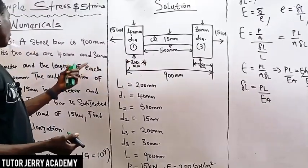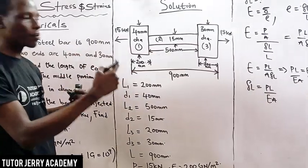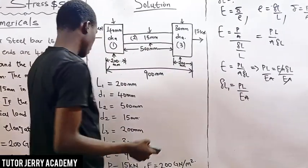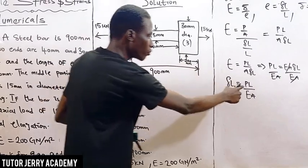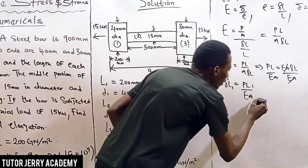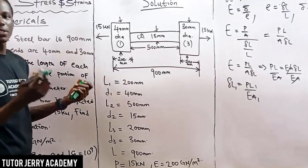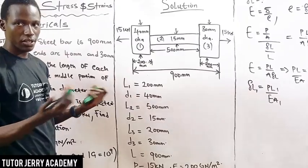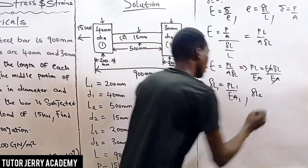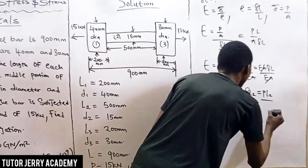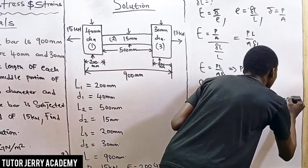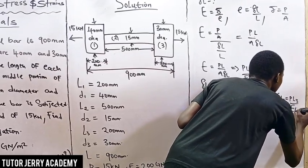Since this bar has three sections, this formula applies to each section separately. P, the load, is constant throughout. So the change in length for section one is P·L1 over E·A1, for section two it is P·L2 over E·A2, and for section three it is P·L3 over E·A3.